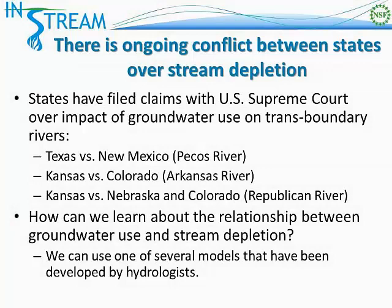That is the phenomenon of stream depletion, and as you've also discussed, stream depletion has been a source of conflict in the United States. States have filed claims with the U.S. Supreme Court over the impact of groundwater use on transboundary rivers. Several states have sued other states, claiming that the other states used too much groundwater in a way that reduced the flow of water in rivers that cross over into their state.